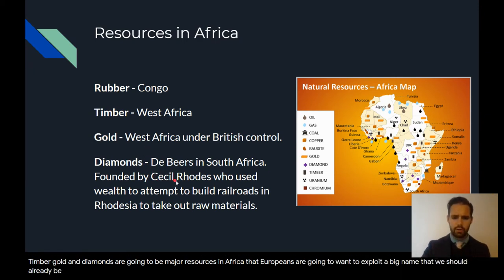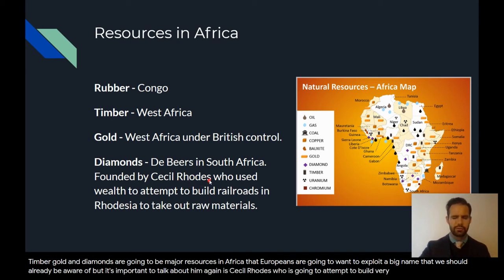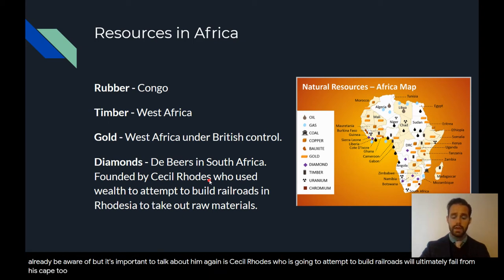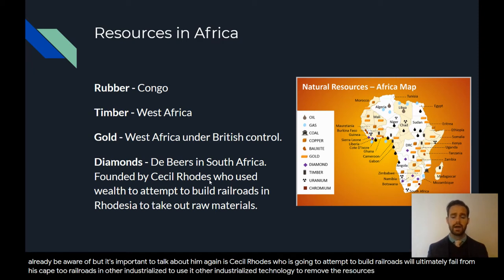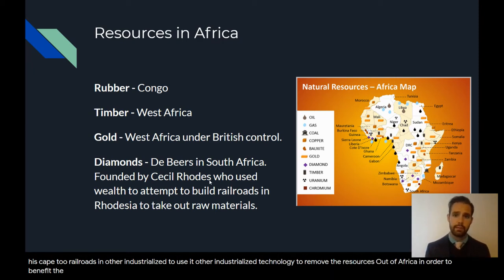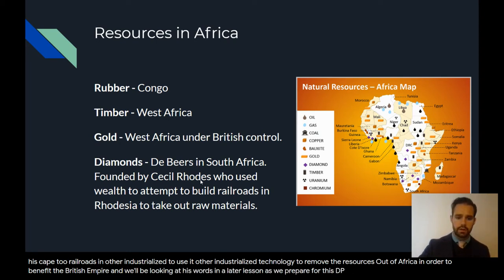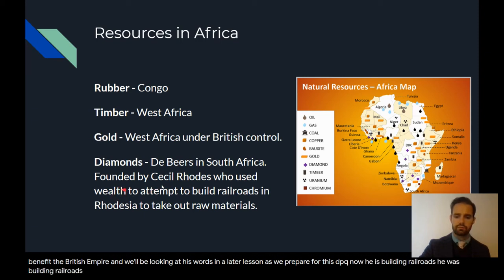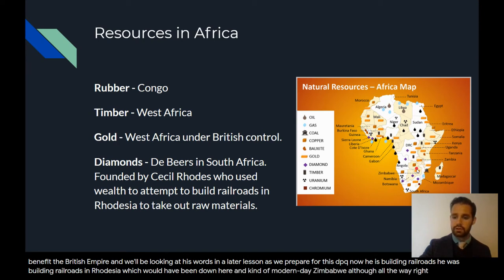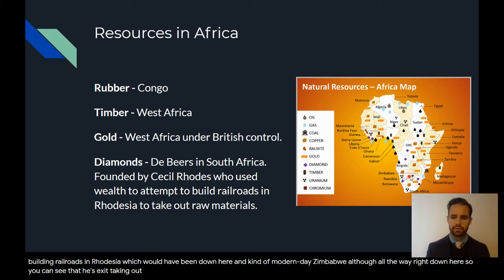A big name we should already be aware of is Cecil Rhodes, who is going to attempt to build railroads — ultimately failing with his Cape to Cairo railroad. He tries to build railroads and use other industrialized technology to remove resources out of Africa in order to benefit the British Empire. He was building railroads in Rhodesia, which would be modern-day Zimbabwe, and he's most known for extracting diamonds.